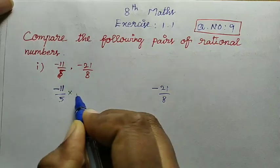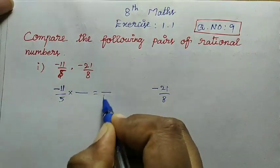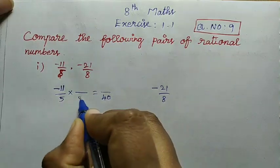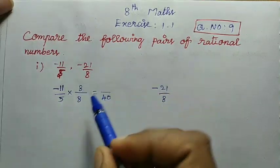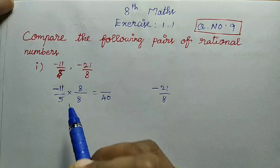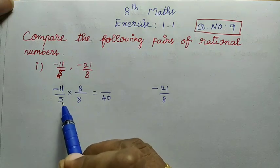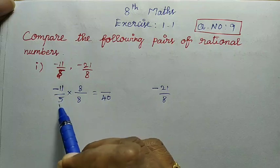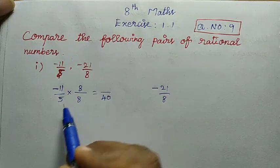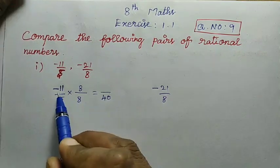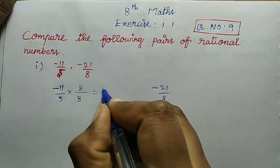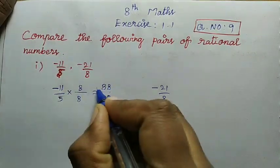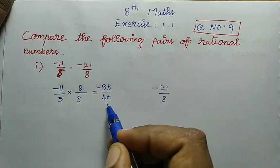We will make the denominator value 40. To get denominator 40 from 5, we multiply by 8. So for minus 11 divided by 5: the numerator 11 multiplied by 8 is 88, giving us minus 88 divided by 40.